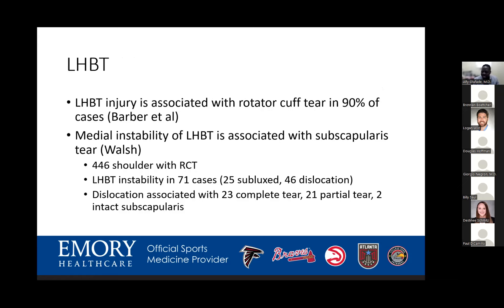Studies reinforce this association. Barbara et al. showed that 90% of long head biceps injuries have associated rotator cuff pathology. Walsh et al., looking at 446 shoulders with rotator cuff injuries, found 71 had long head biceps instability — and of those with dislocation, 95–96% had subscapularis tears. The point: long head biceps pathology is almost always associated with rotator cuff injury, particularly the subscapularis, which I'll highlight further.